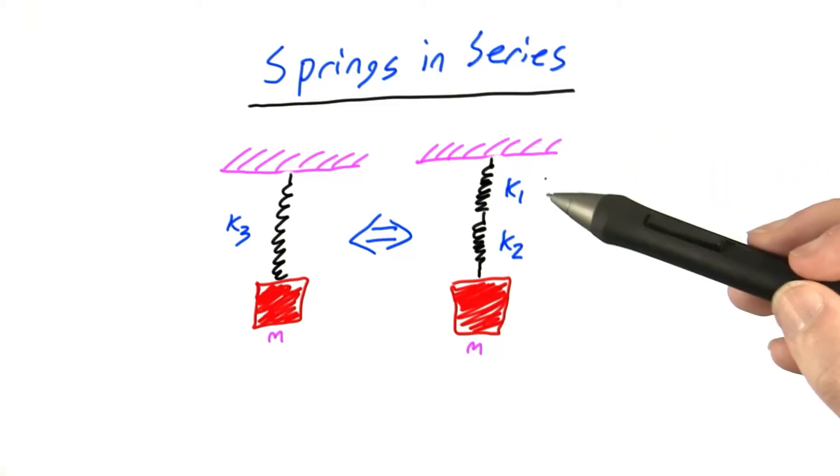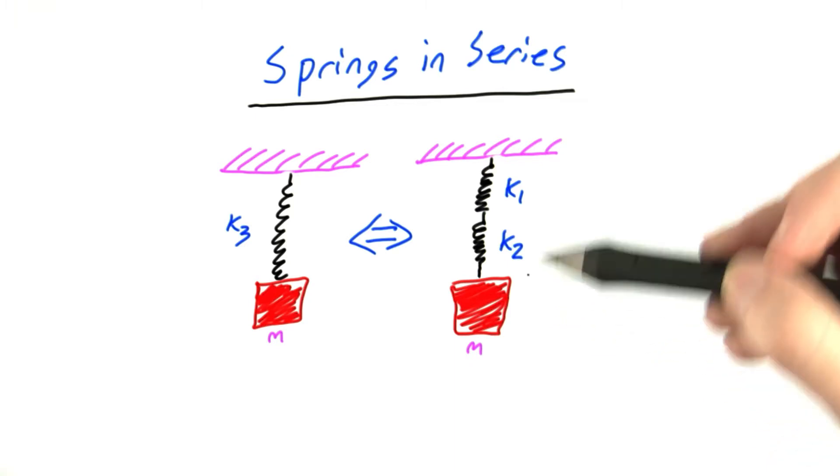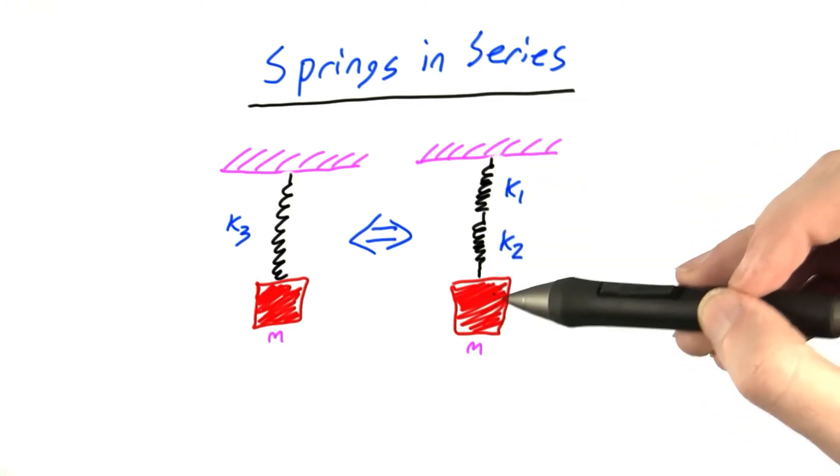In this problem, we're going to investigate what happens when you connect a block to two springs, not just one. And unlike in the shock absorbers problem, we're going to connect these springs to each other, not both directly to the block.